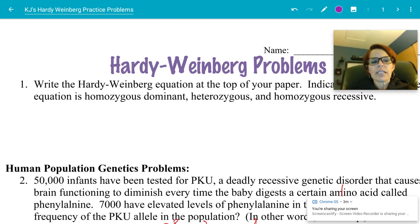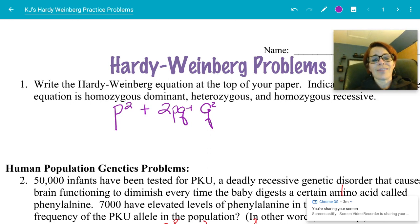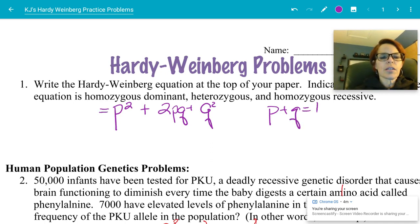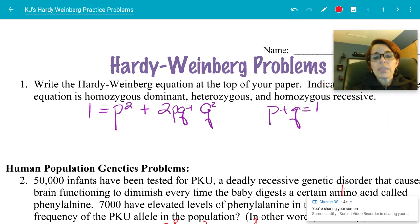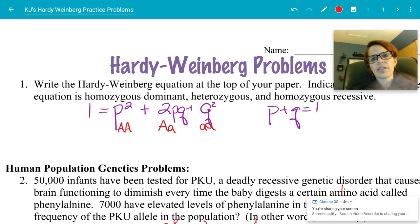Problem number one says to write the Hardy-Weinberg equation at the top of your paper. So I'm going to go ahead and do that. The Hardy-Weinberg equation, if you remember from the notes, is p squared plus 2pq plus q squared, when p plus q equals one. You could say the whole thing equals one, but I usually skip that part.